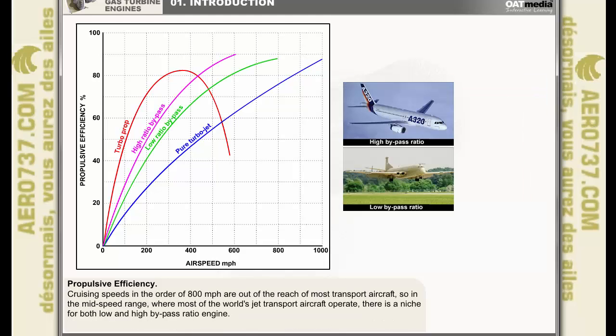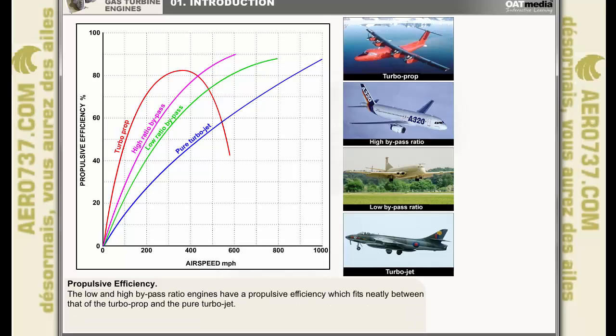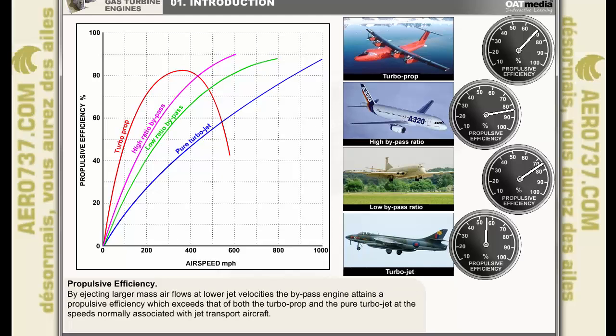Cruising speeds in the order of 800 miles per hour are at present out of the reach of most transport aircraft, and this fact means that in the mid speed range, where most of the world's jet transport aircraft operate, there is a niche for the bypass engine, both low ratio and high ratio. The low and high bypass ratio engines, which includes the ducted fan or turbofan engine, have a propulsive efficiency which fits neatly between that of the turboprop and the pure turbojet. By dealing with comparatively larger mass air flows at lower jet velocities, the bypass engine attains a propulsive efficiency which exceeds that of both the turboprop and the pure turbojet at the speeds normally associated with jet transport aircraft.